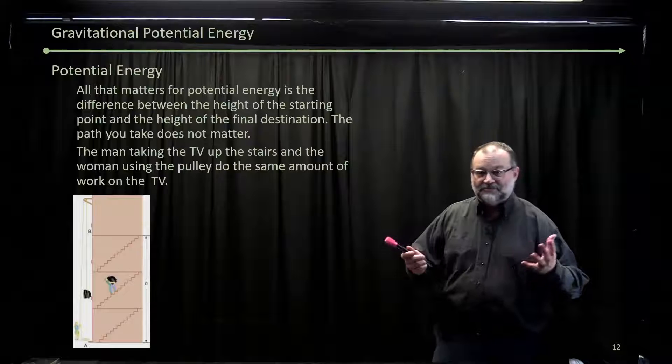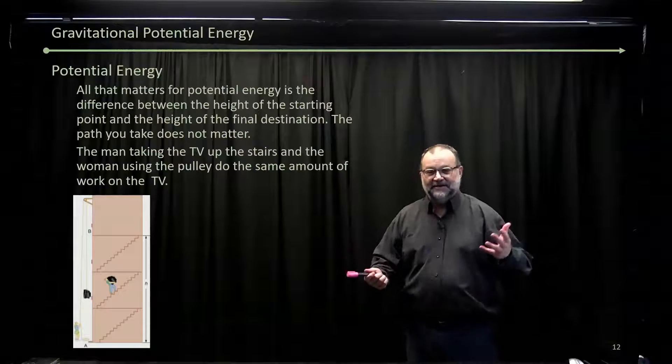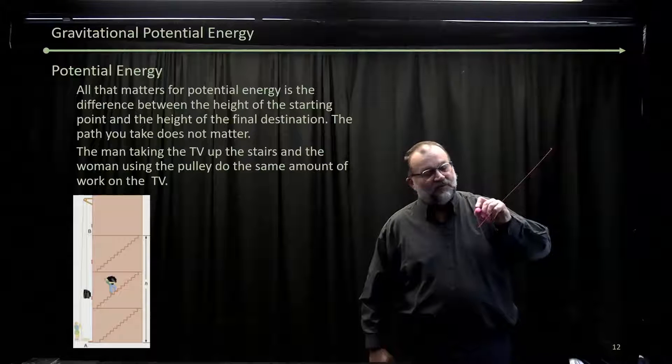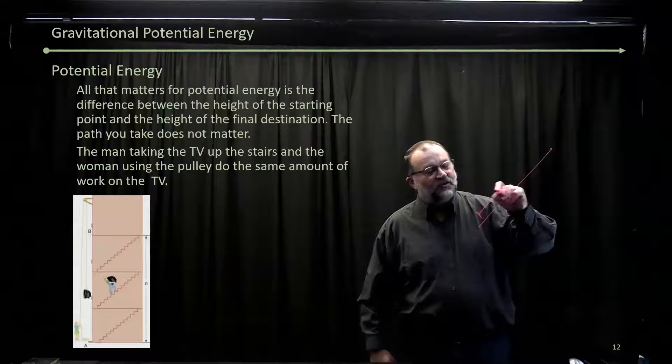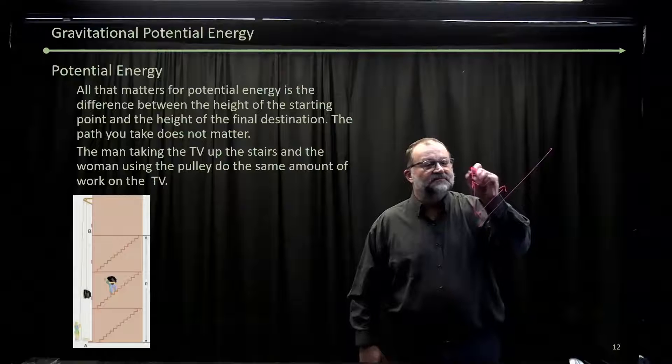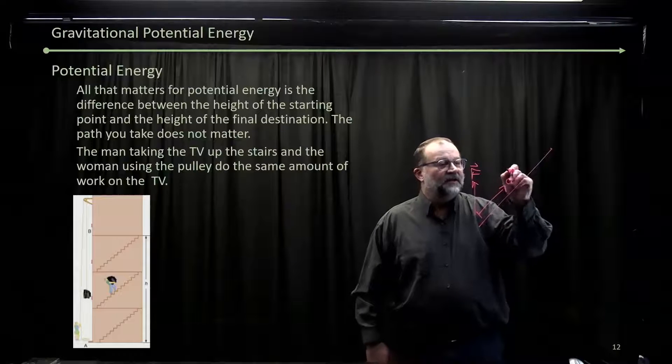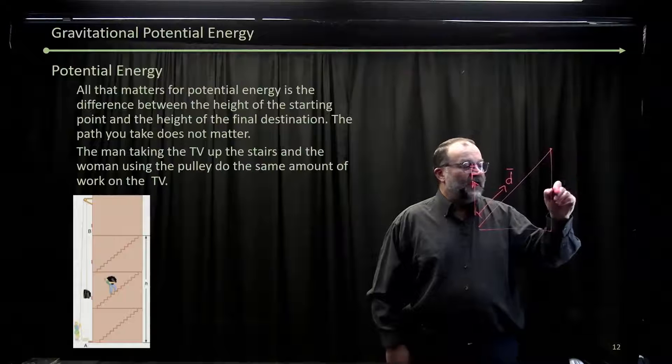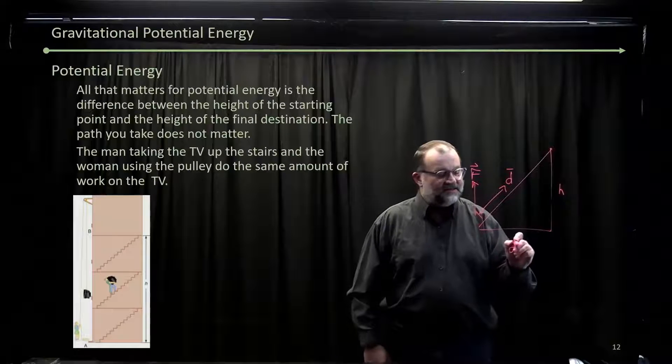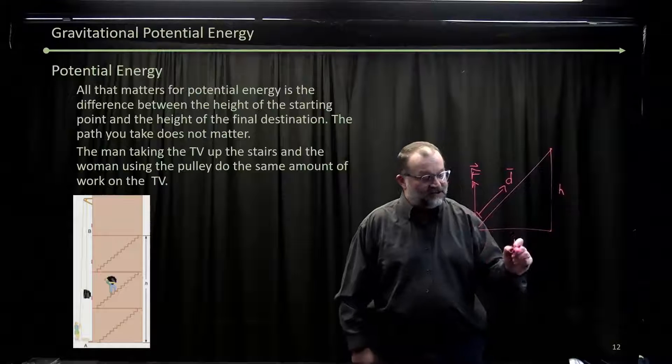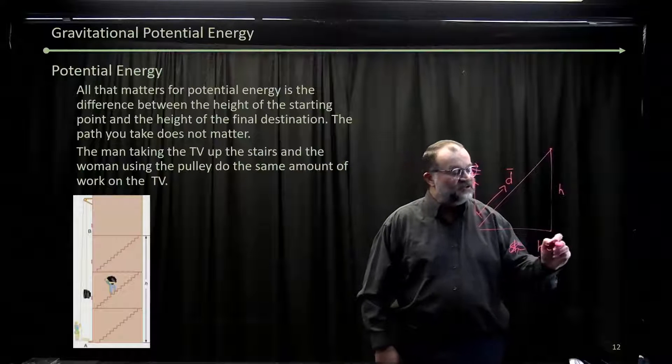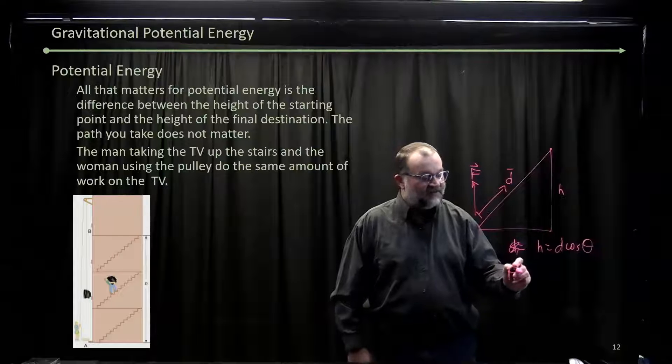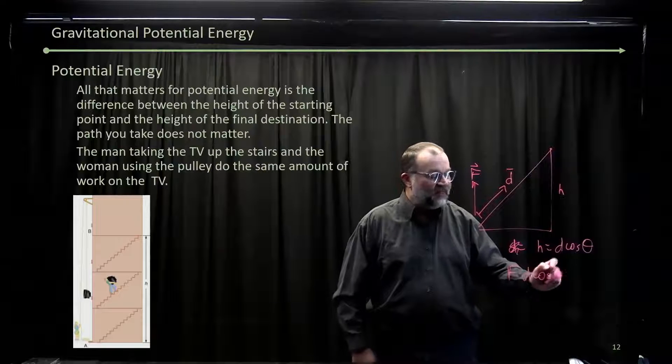If we look at that in terms of what we're doing, let's talk about the stairs again. We have our force, we have our distance, we're going up the stairs. And we ended up with h and d, where h is d cosine theta. So the work done is f times d times cosine theta.